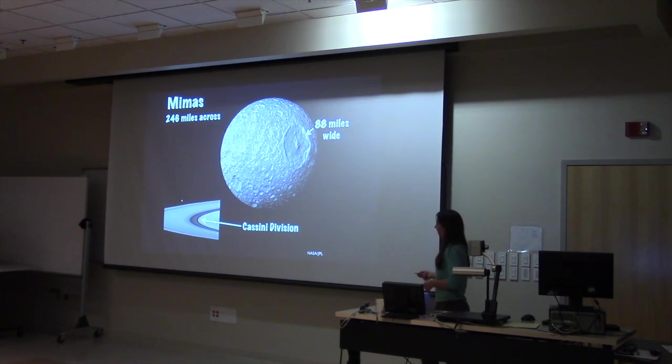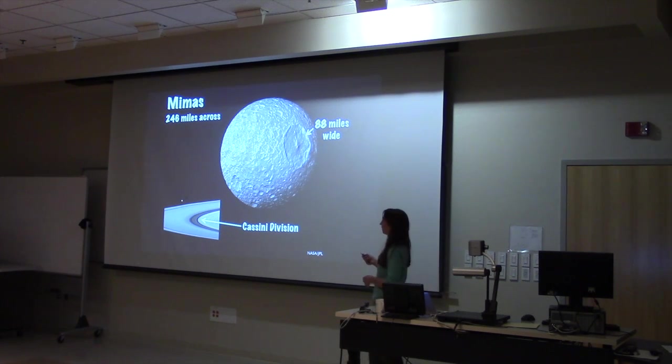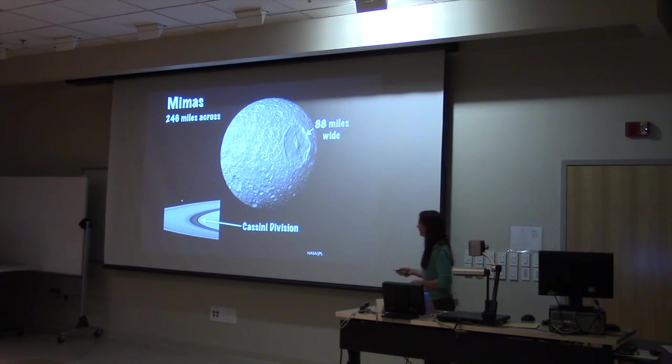Another thing that's cool about Mimas is it actually causes that Cassini gap, so that gap in the rings that Cassini observed. That's actually at least partially caused by Mimas. And one of the things that Cassini discovered is it's not really a gap. There is material in there, but the particle size is different, so it appears dark. But there are regions where the material is almost cleared out.